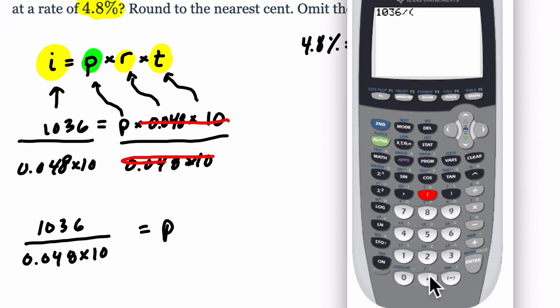So you want to make sure you enclose this product, 0.048 times 10 in parentheses, or you can do 0.048 times 10 first, find the answer, and then do 1,036 divided by that result. And that gives us the principle amount that we need.